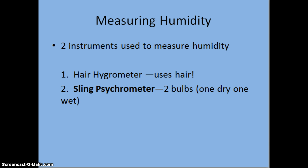Two ways that we measure humidity are by using either a hair hygrometer or a sling psychrometer. In class, we are going to use sling psychrometers to measure relative humidity both in the classroom and outside. This tool uses two different bulbs — one dry, one wet — and you sling them around in a circular manner, then look at the difference in temperature between the two. The closer the temperatures are to one another, the higher the humidity is in the air.